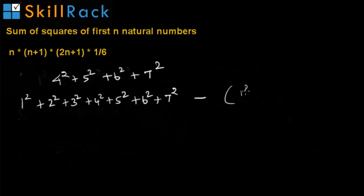So now we see these as two sequences. In the first sequence from 1 to 7 and the next sequence from 1 to 3. So here n is equal to 7 and in the subtracting sequence n is equal to 3.